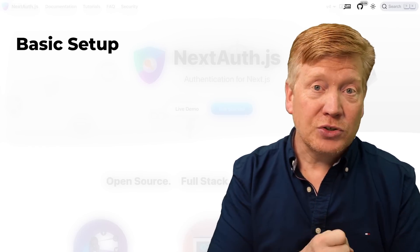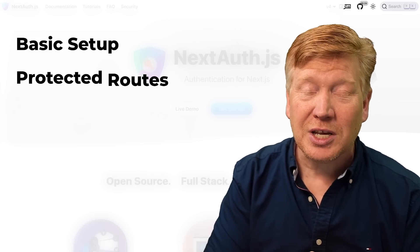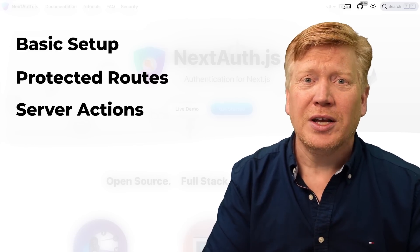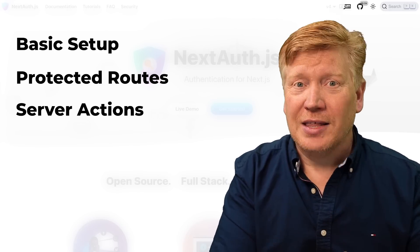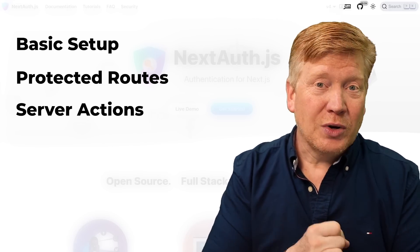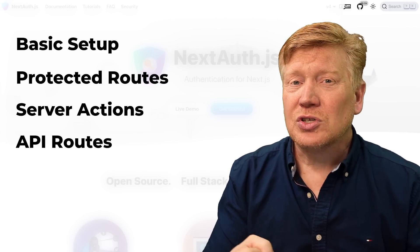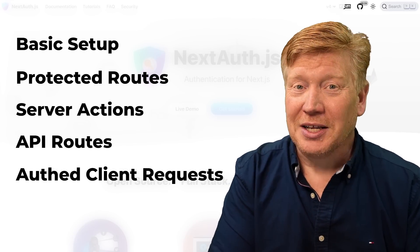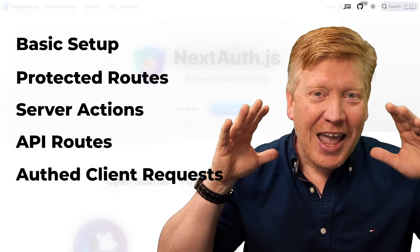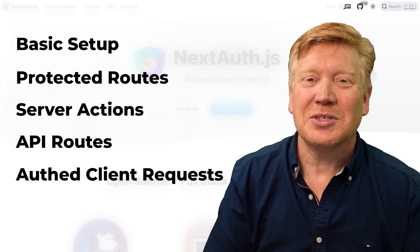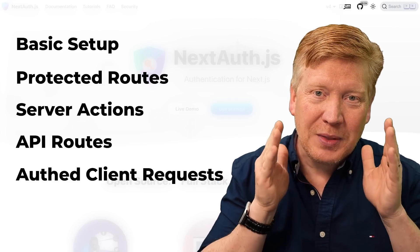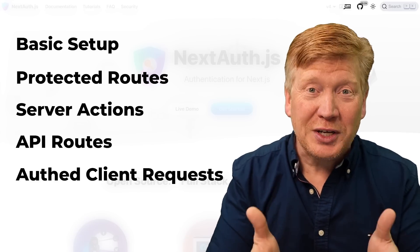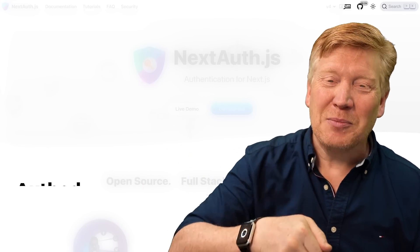I'm going to show you how to do the initial setup, how to do protected routes, how to do server actions — which are new to App Router — and make sure that you get the user ID in that. We're going to do user ID inside API routes, get those API routes from the client and from the server. Basically everything I could think of when it comes to NextAuth to make sure that you have every scenario covered. All the code will be available for free in GitHub in a link right down below.